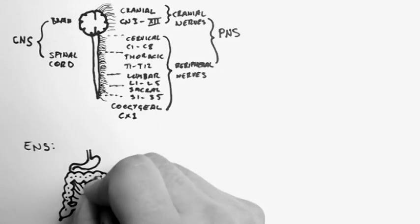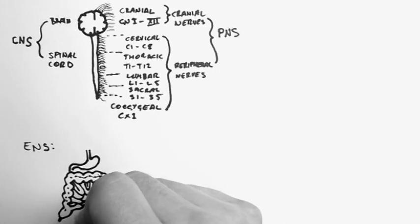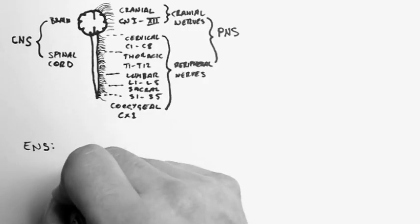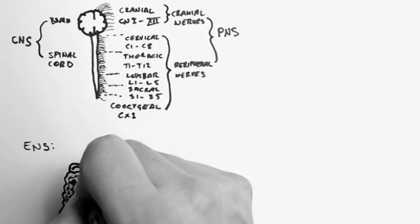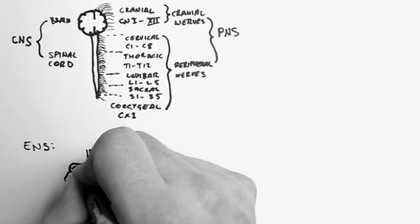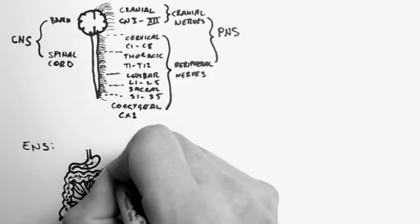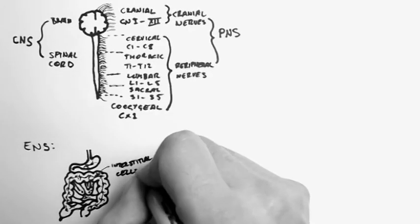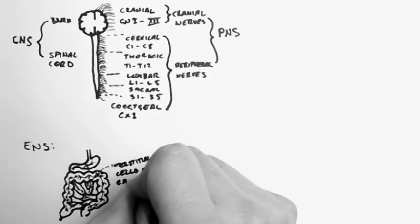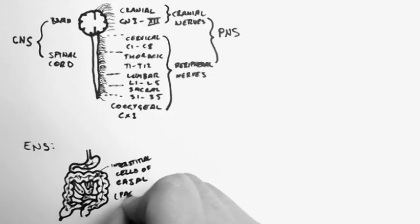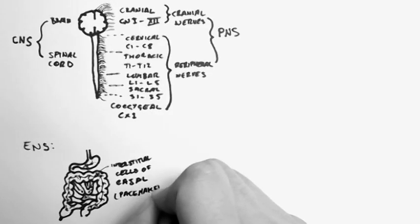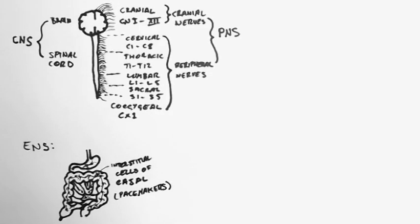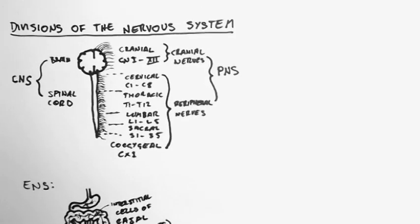It won't function for very long, but it knows where food is within the tract, and knows how to control its contractions. Now this is done through a bunch of little cells, and networks between these cells. And they're known as the interstitial cells of Cajal. And they're pacemaker cells, which basically allow for coordinated contraction.